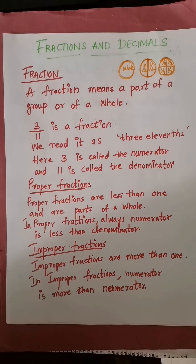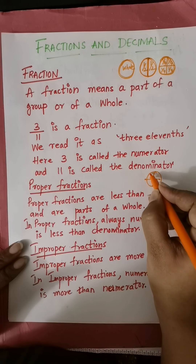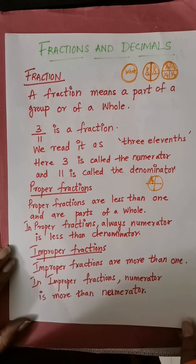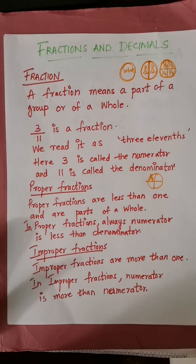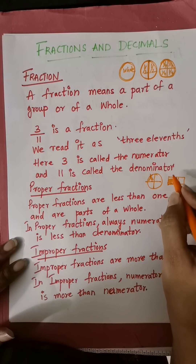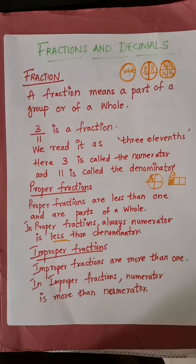Now, types of fractions. The first one is proper fraction. A proper fraction is less than 1. For example, this is a whole and I am dividing it into four equal parts and taking 1 out of 4. Proper fractions are always less than 1 and are parts of a whole. In a proper fraction, the numerator is always less than the denominator.